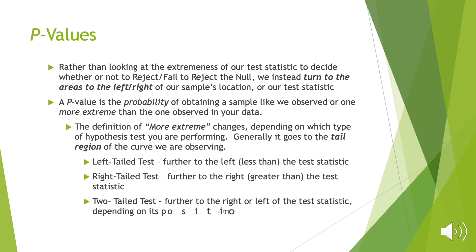In a two-tailed test, we have a 'not equal to' in our alternative hypothesis. Since we're not committed to a direction, we find where the test statistic falls, calculate the area in the more extreme tail region on that side, and then also include the corresponding area on the other side of the curve. Basically, whatever area we find, we double it — and that will be our p-value.